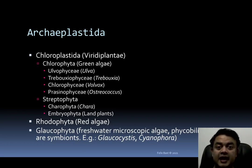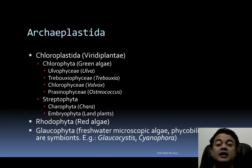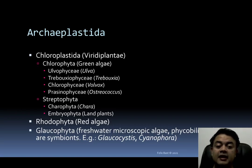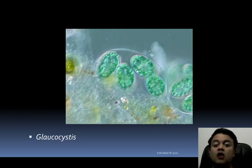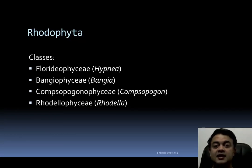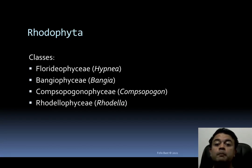Rhodophyta is the red algae, found in freshwater or marine environments. Glaucophyta is another group of Archaeplastida — not well studied, freshwater microscopic algae, phycobilin-rich, and mostly symbiotic. Examples include Glaucocystis and Cyanophora. Rhodophyta has four main classes: Florideophyceae (e.g., Hypnea), Bangiophyceae (e.g., Bangia), Compsopogonophyceae (e.g., Compsopogon), and Rhodellophyceae (e.g., Rhodella).